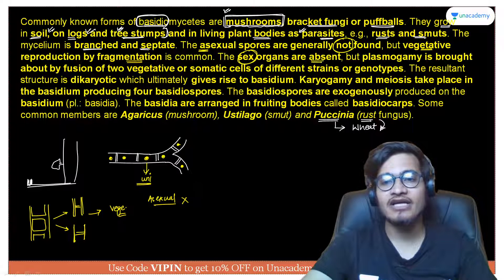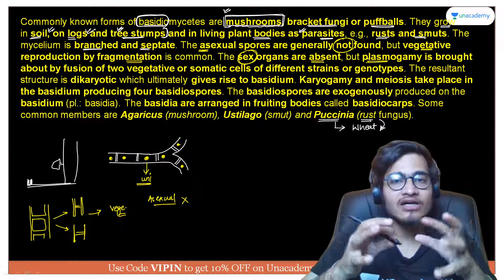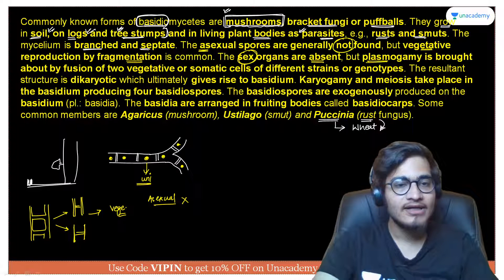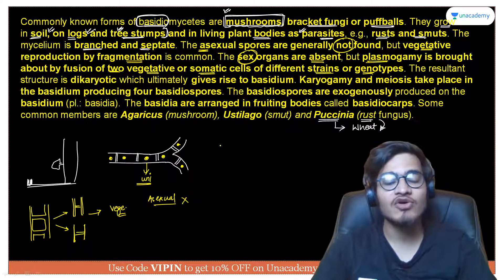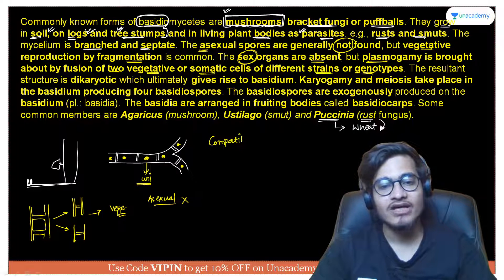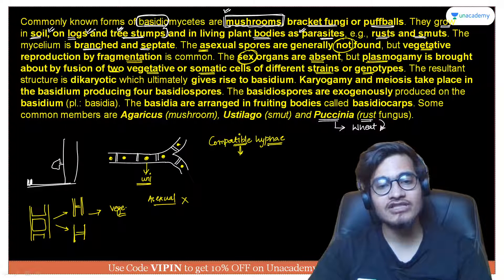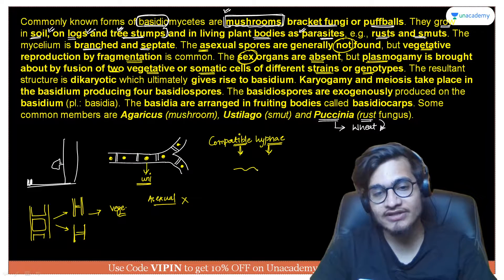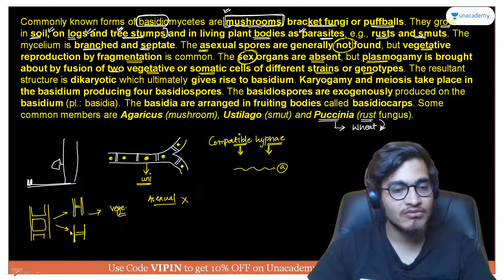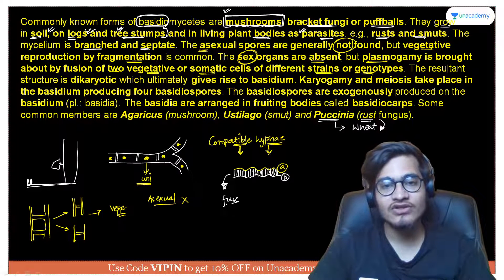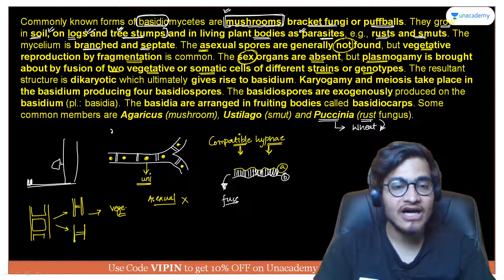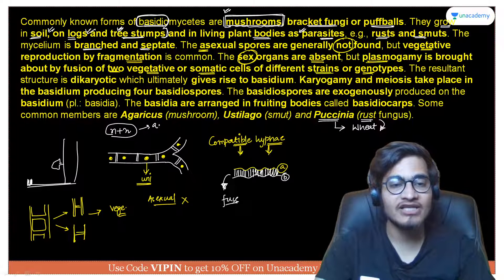Sex organs are absent in Basidiomycetes. Sexual reproduction occurs by plasmogamy — the fusion of protoplasm of two vegetative or somatic cells from compatible hyphae. This leads to a dikaryotic stage, giving an n+n type of arrangement, which is present in both Ascomycetes and Basidiomycetes.